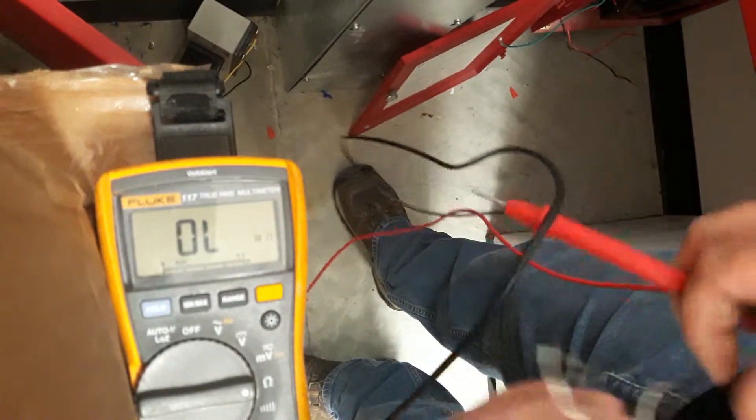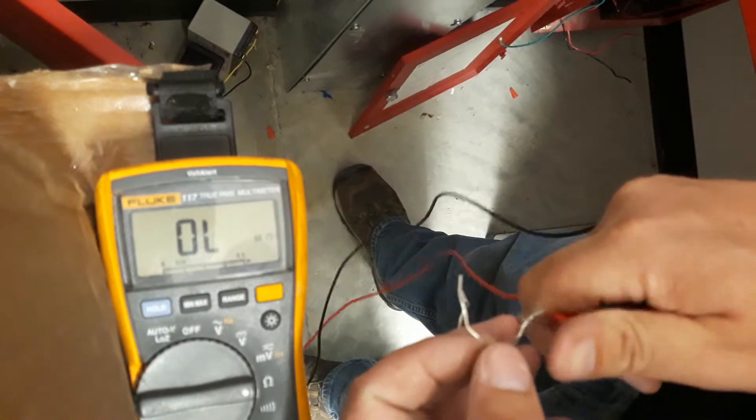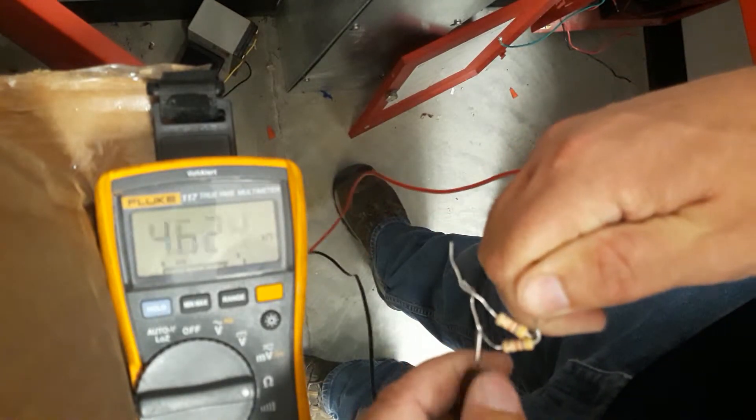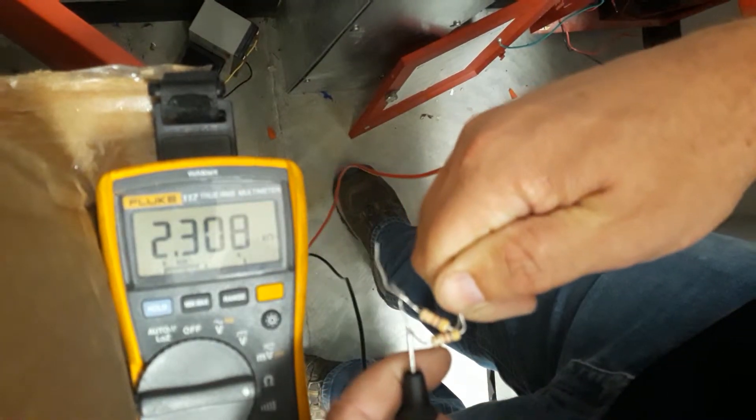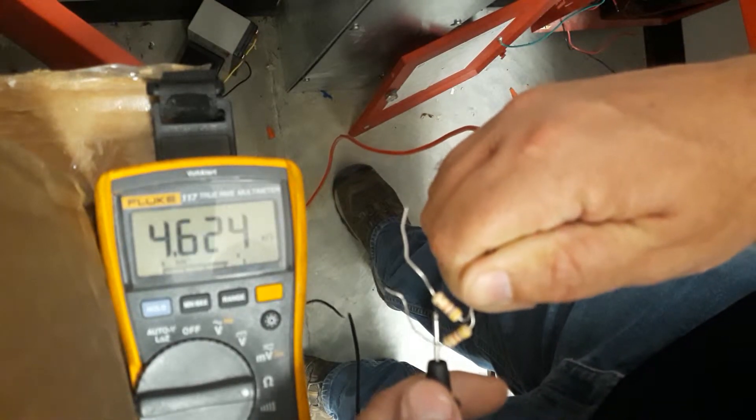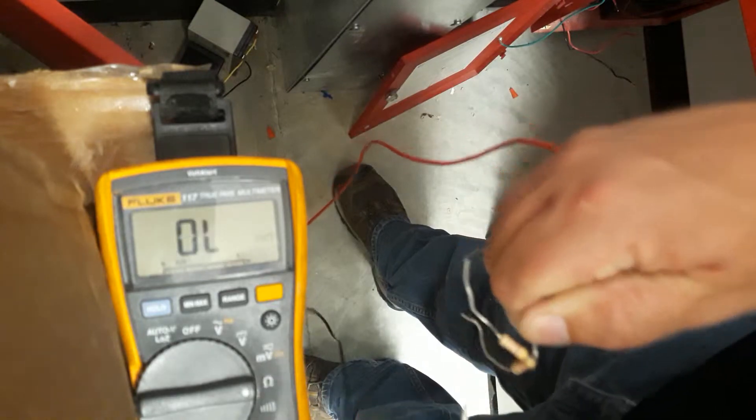So I got it on ohms, got two individual resistors. Each one of these resistors is, I'm just touching, 4.6, 4.6 right?